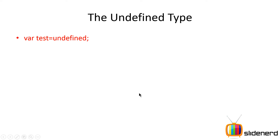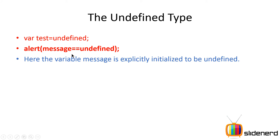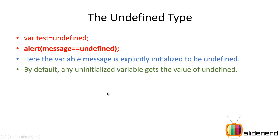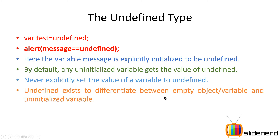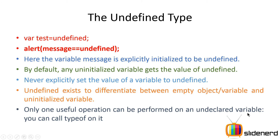You could also explicitly write var test = undefined, and alert(test == undefined) will again return true. However, you should never explicitly initialize a variable to undefined. The reason is that undefined exists to differentiate between an empty object and an uninitialized variable. Only one operation can be performed on an undeclared variable: you can call typeof on it, and its value will be undefined.